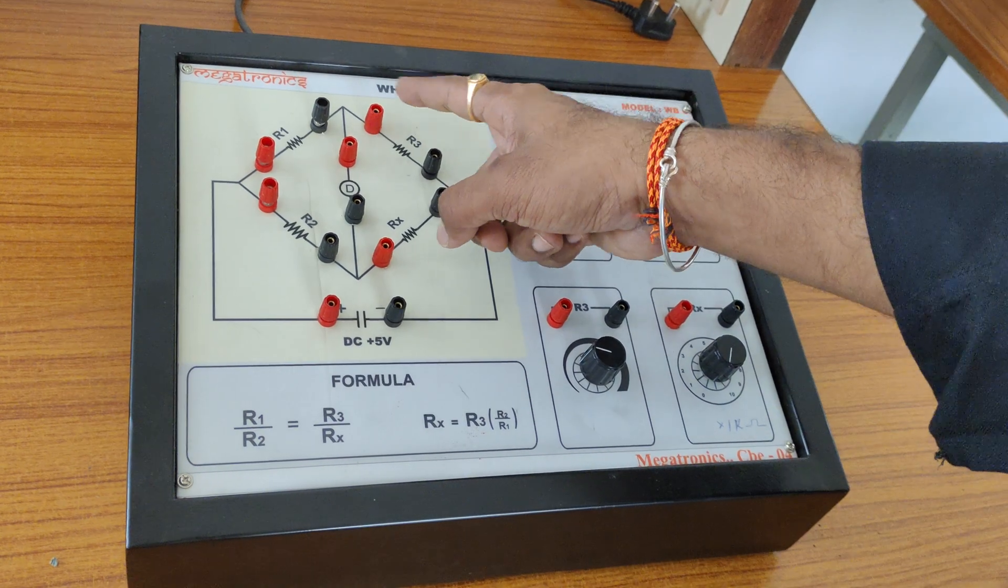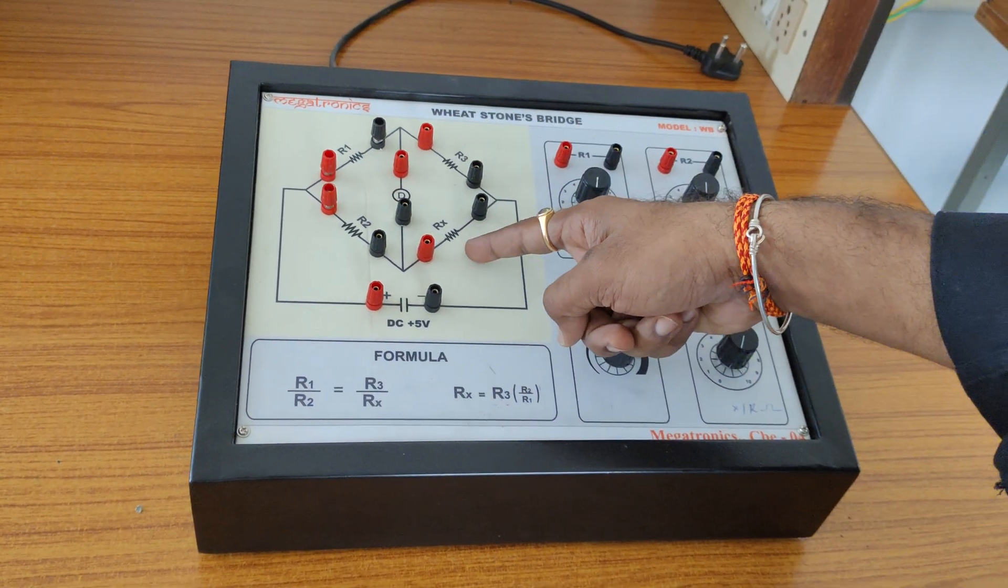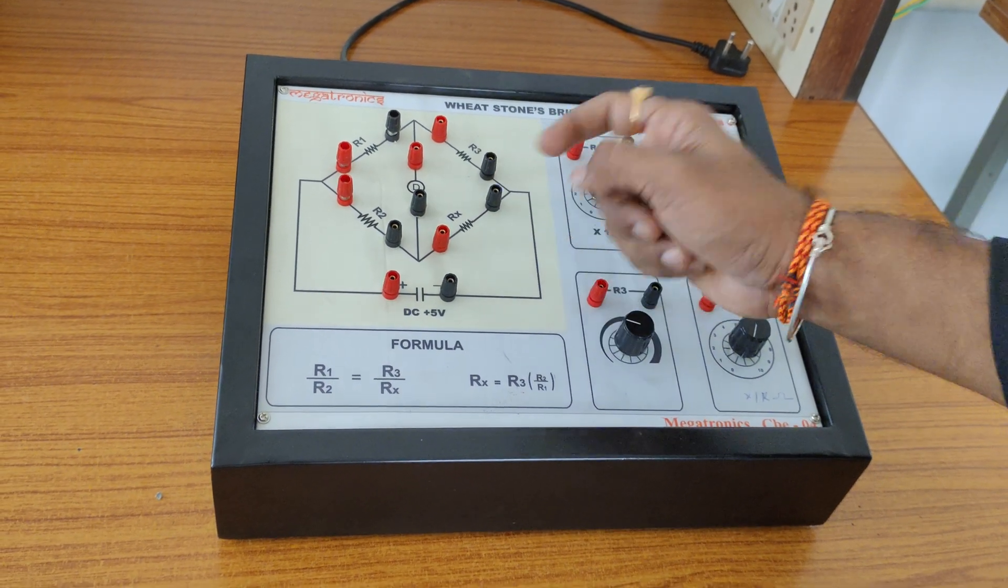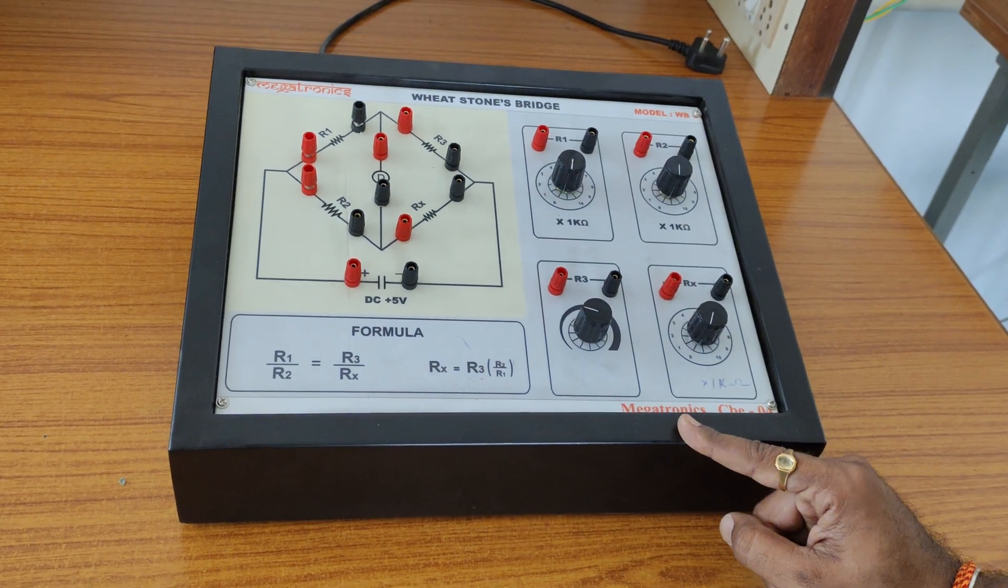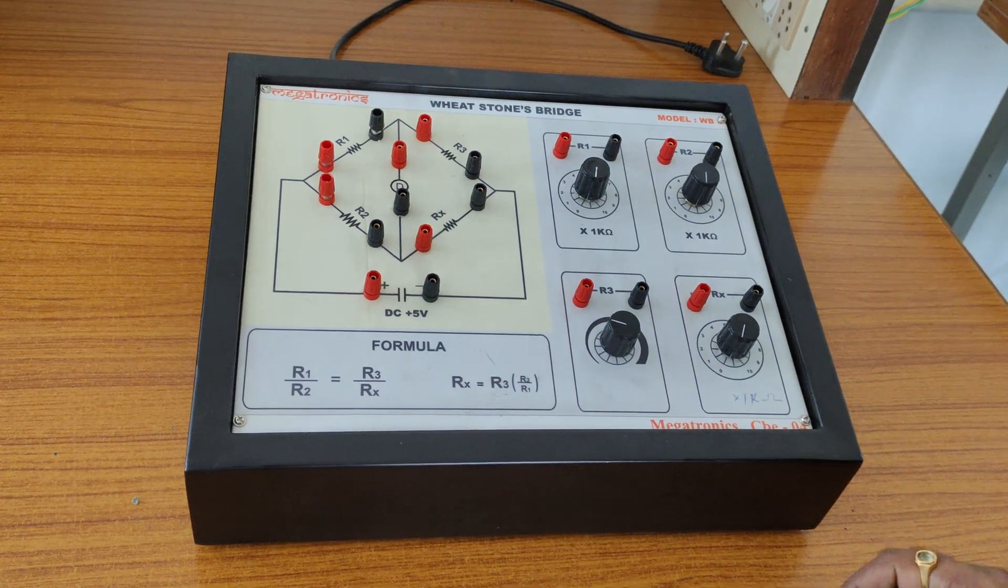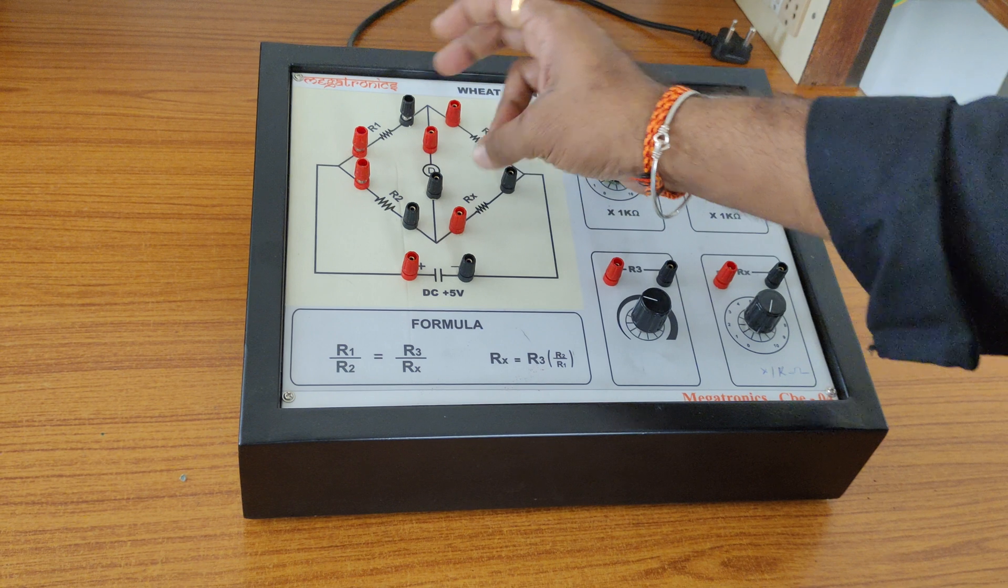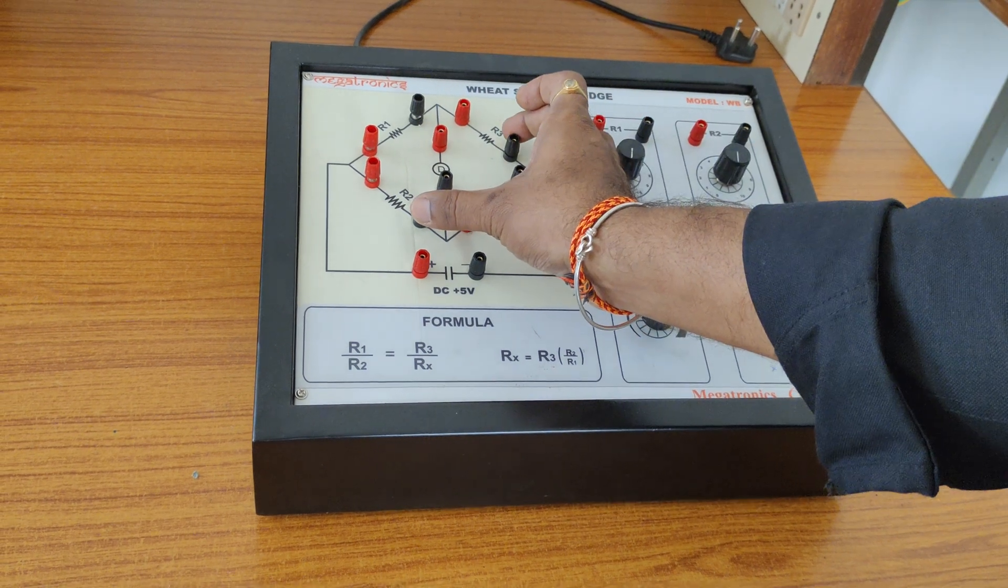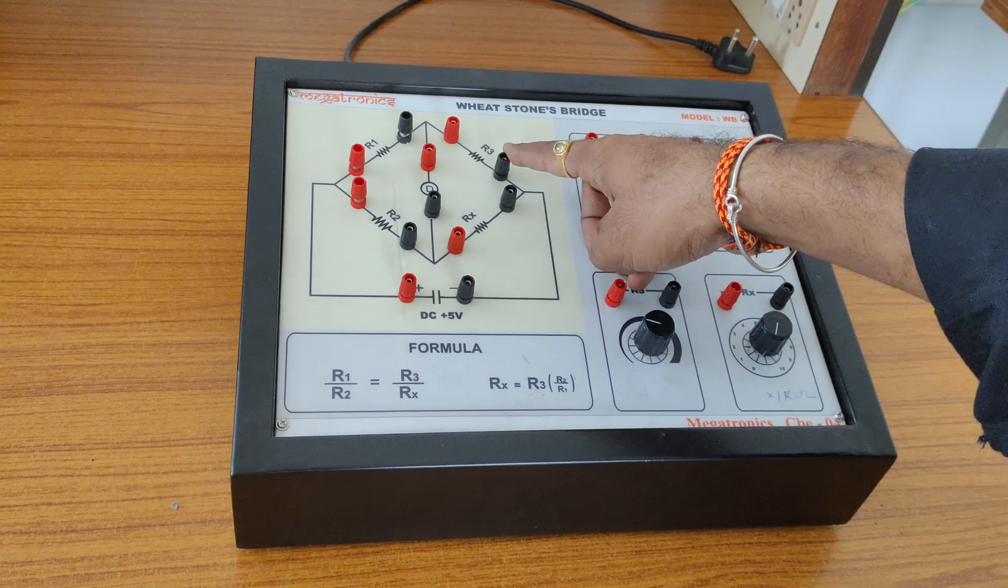We can easily observe the things. We are having four arms R1, R2, R3, and R4 or else Rx. These four are connected in four arms in the shape of a rhombus and we are having some DC supply voltage. We can easily observe the product of these two arms is equal to the product of these two arms: R1 into Rx is equal to R2 into R3.